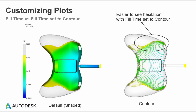The plot on the left is the stock fill time plot. By default it's set to shaded, and you can see the color segments go from a shaded distribution from one color to the next. If we go into plot properties and change that to be a contour, these ISO lines now give us a different view of what's potentially happening. If we have concerns about hesitation or race tracking, when ISO lines are close together that could be a sign of hesitation. Wide distributions between ISO lines indicate potential race tracking — very difficult to observe in the default shaded view.